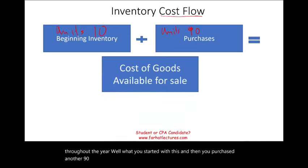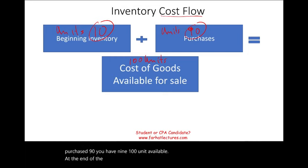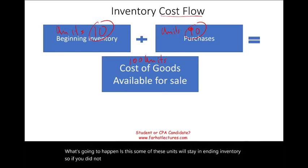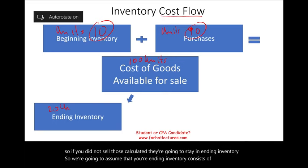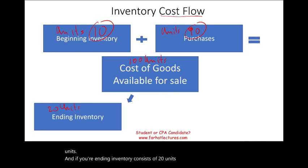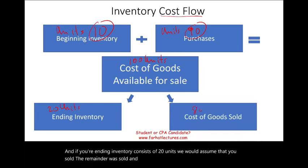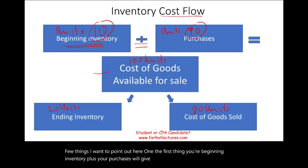You started with 10 units and purchased another 90, giving you 100 units available for sale. At the end of the period, some of these units stay in ending inventory. If you had 20 units remaining in ending inventory, it means 80 were sold. Beginning inventory plus purchases gives you cost of goods available for sale. When you sell inventory, it becomes cost of goods sold.